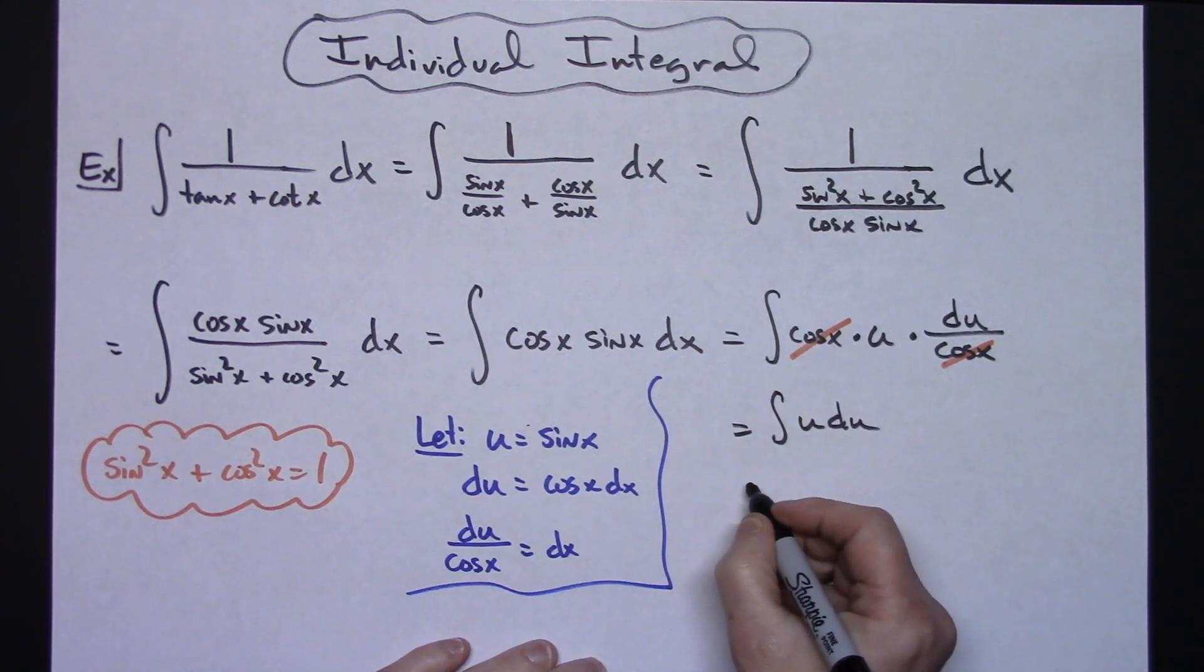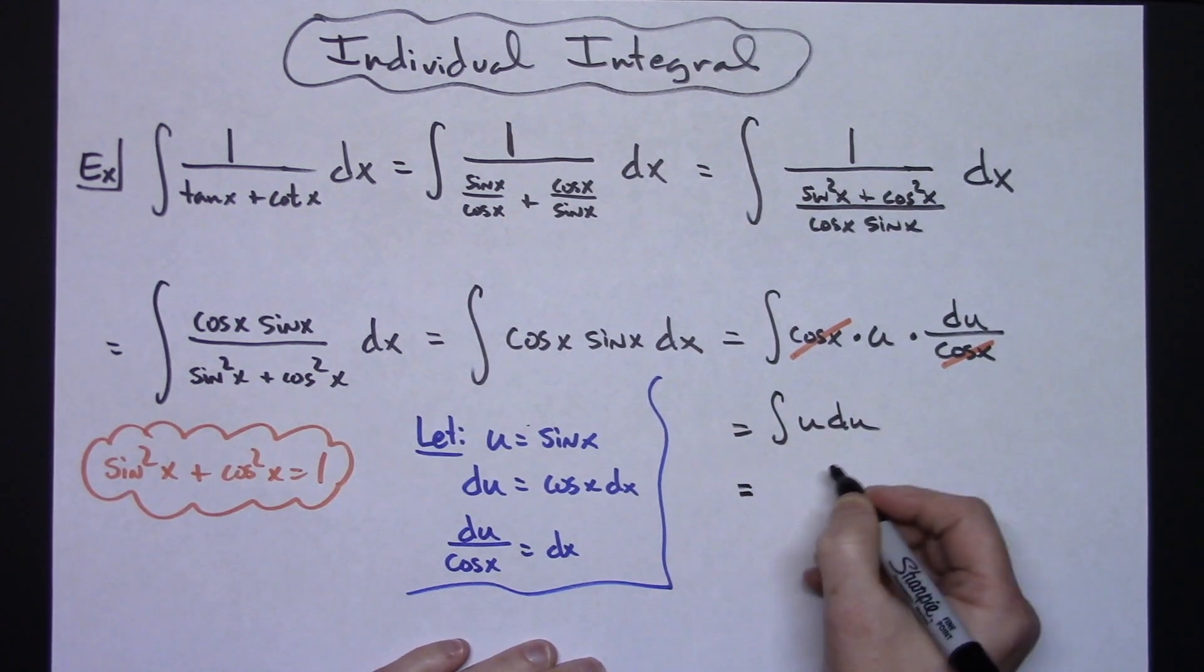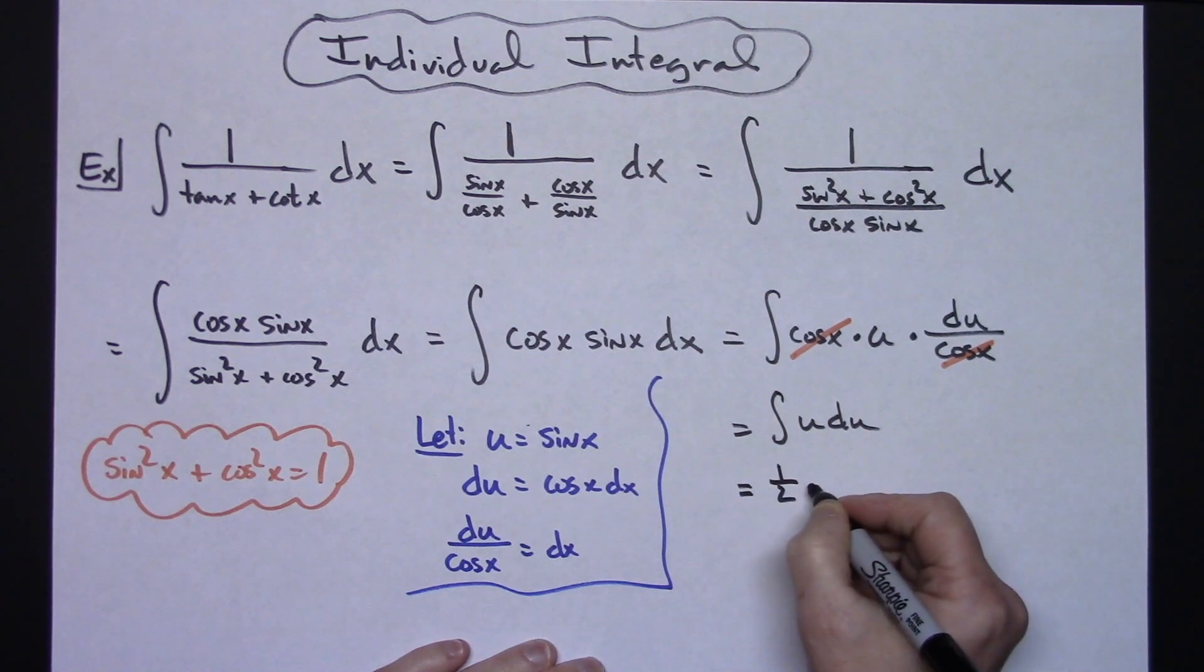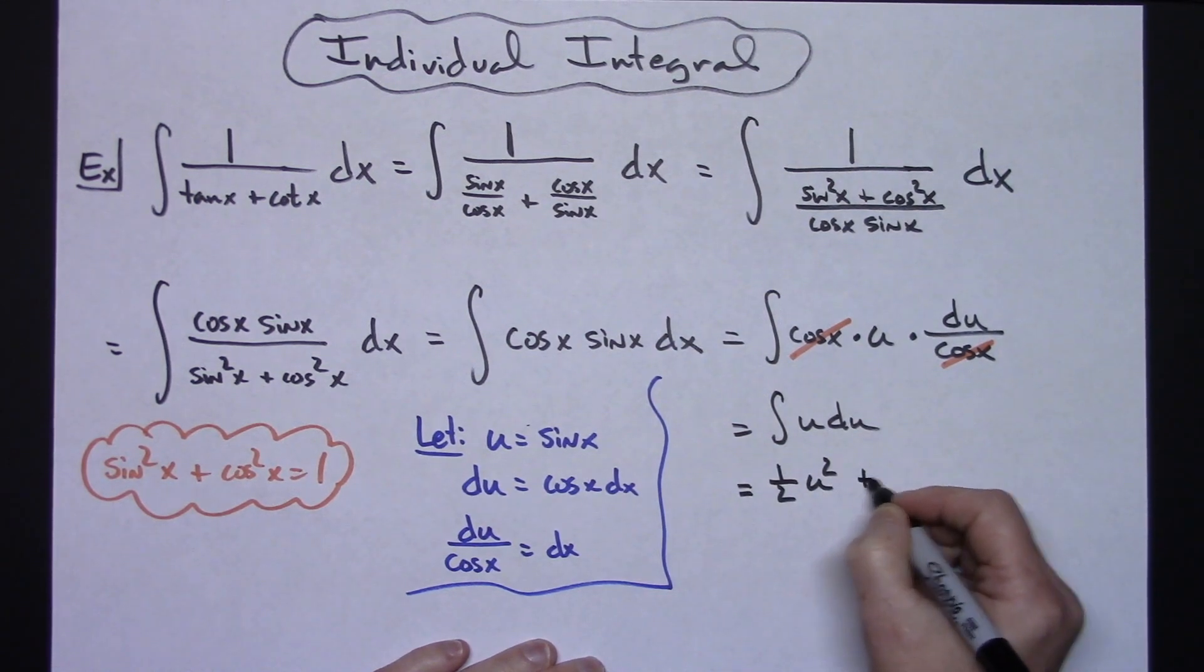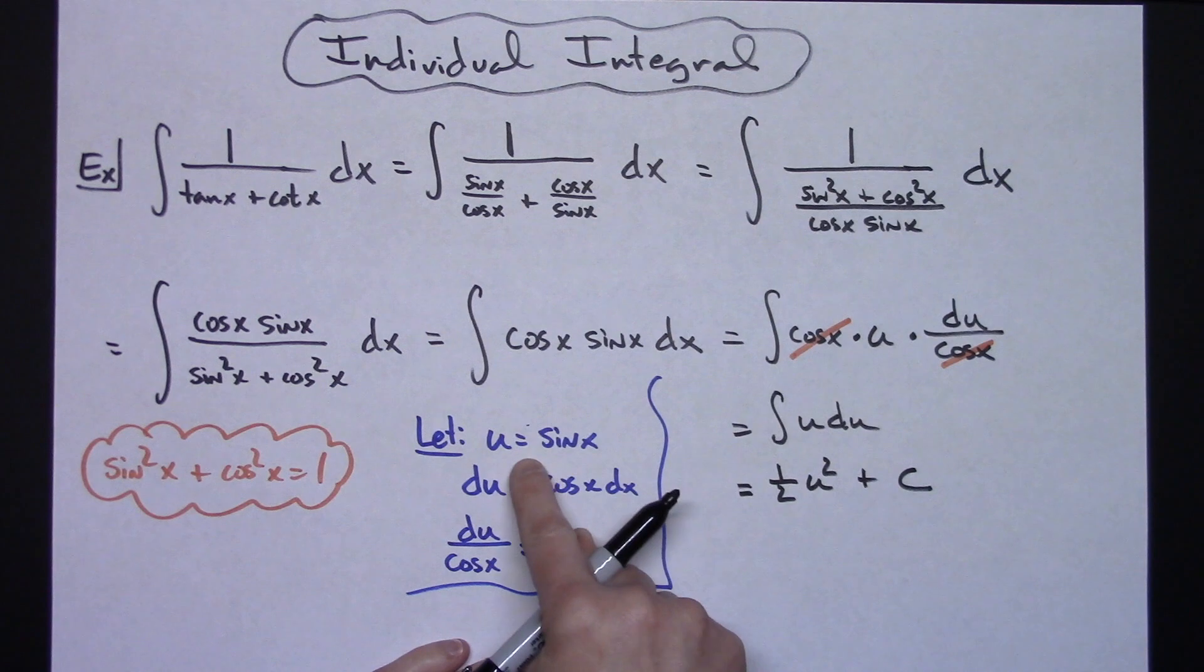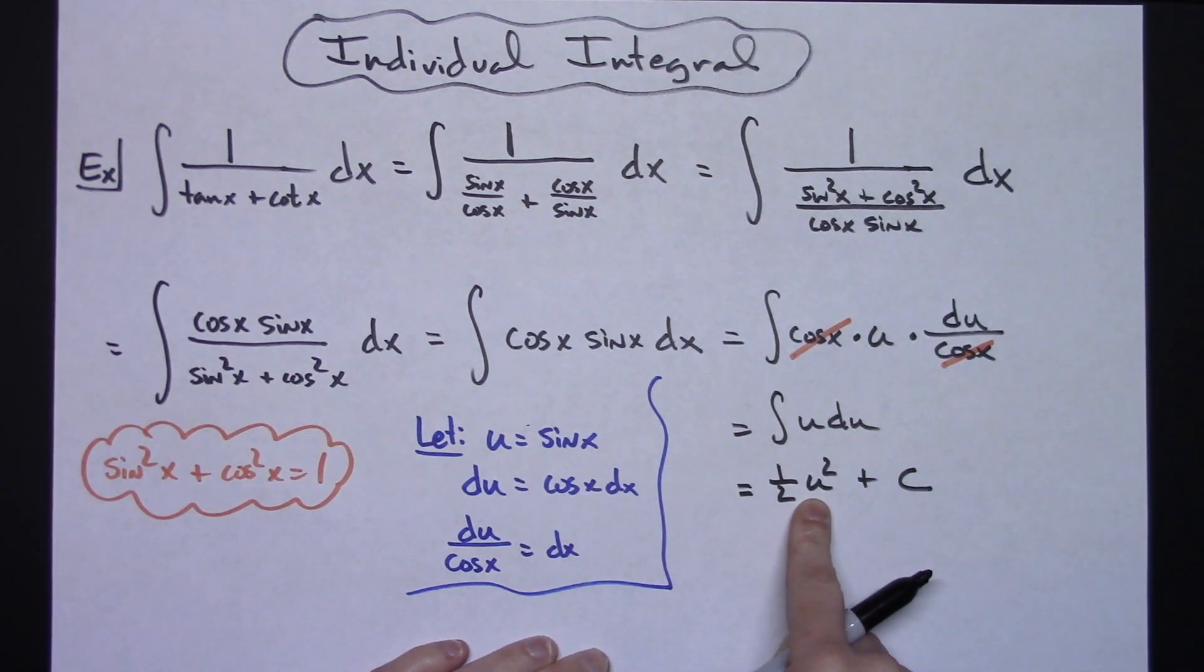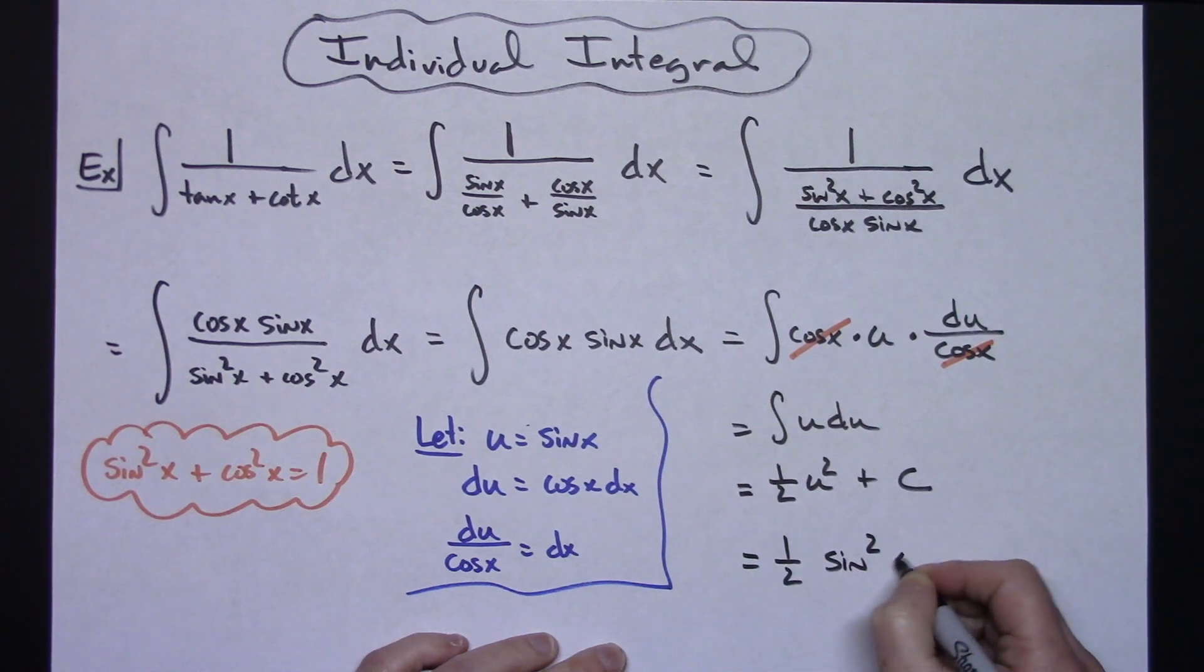Let's see, add one to our exponent which is going to give us a 2. So we'll have a 1 over 2 u squared plus c. Now we can replace that u with what it is, it's going to be sine x. So then we'll have a 1 half sine squared x plus c.